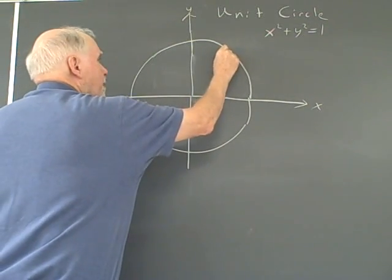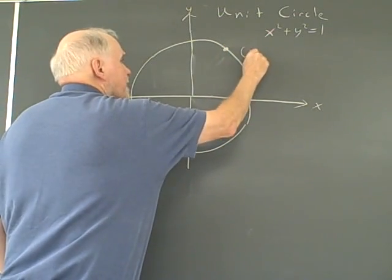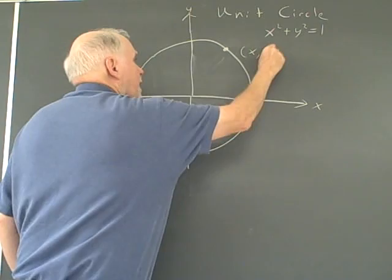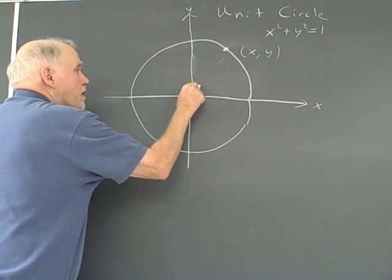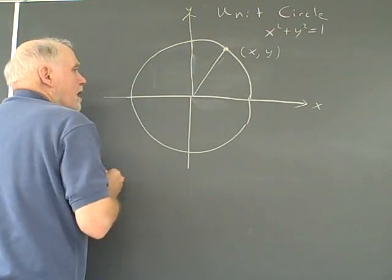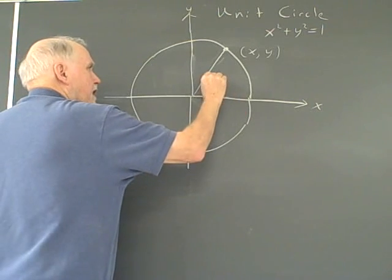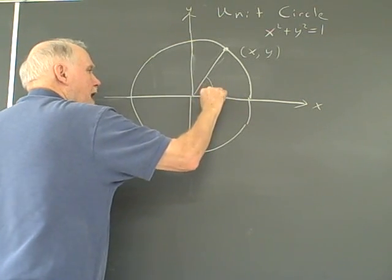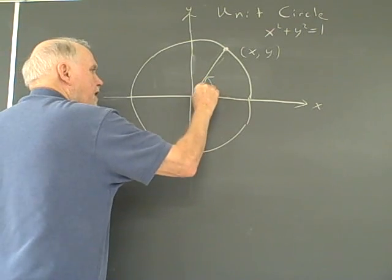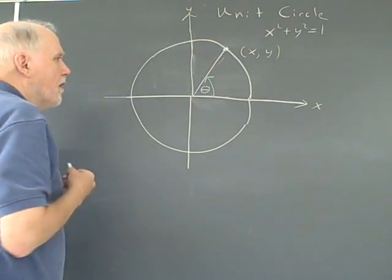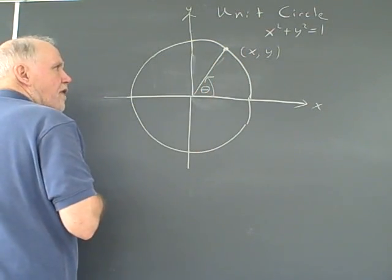If I take a point, any point on the unit circle, that would give me an x comma y in the Cartesian coordinate system, and I draw a ray from the origin to that point, it will form an angle with the x-axis being the initial side and this ray being the terminal side, and we'll call this theta. So this point is associated with this angle theta.